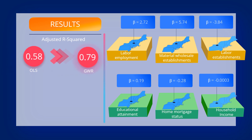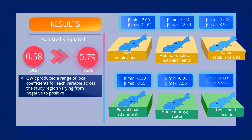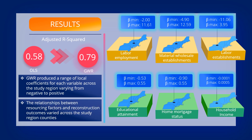The GWR model gave an adjusted R-squared value of 0.79, which was a significant improvement over the OLS model. It is to note that the OLS gave one coefficient for each variable, which remained constant for the entire study region. However, GWR produced a range of local coefficients for each variable based on geographic location. The change in both the magnitude and the direction of the coefficient suggests that the relationship between resourcing factors and reconstruction outcomes varied across the study region counties.